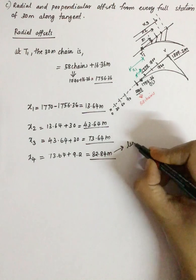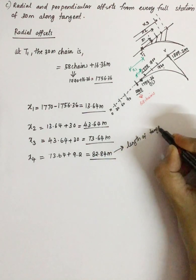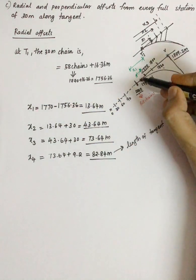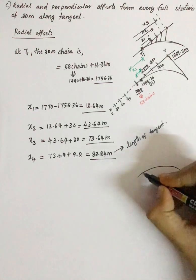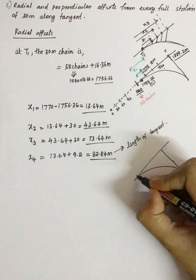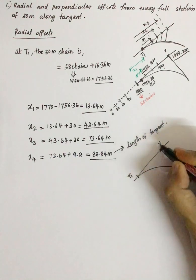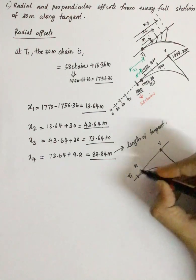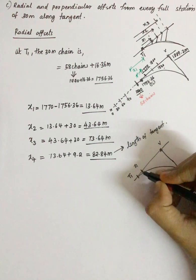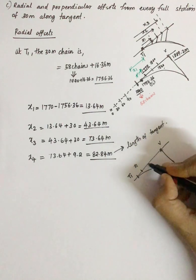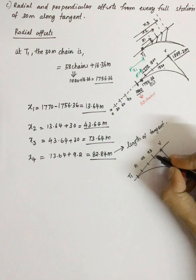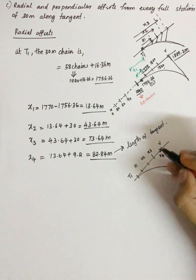This 82.84 meters is the length of the tangent found in the first part. Now all X values are obtained. From T1, the tangent T1-V is divided into points: X1 at 13.64m corresponding to chain age 1770, then X2 at the next 30m, X3 at the next, and X4 at the last point — all measured from T1.